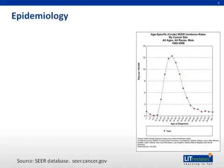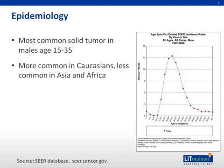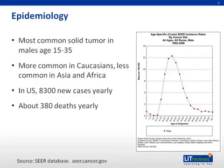The epidemiology of testicular cancer: in the United States, this is the most common solid tumor in males aged 15 to 35. It's more common in Caucasians and less common in Asia and Africa. In the United States, there are 8,300 new cases yearly with about 380 deaths yearly, due to significant advances in therapy, particularly cisplatin-based chemotherapy and high-dose chemotherapy with autologous stem cell rescue, which have substantially improved long-term outcomes.